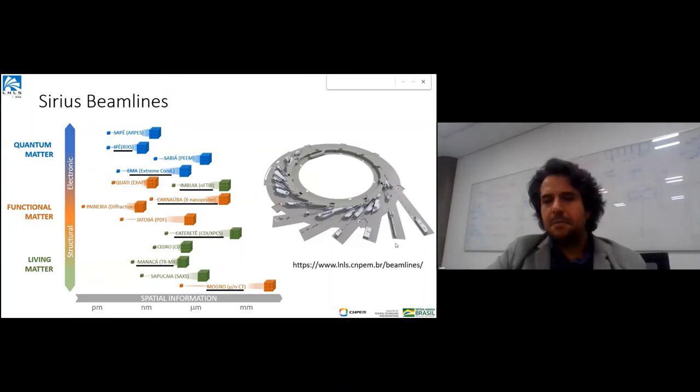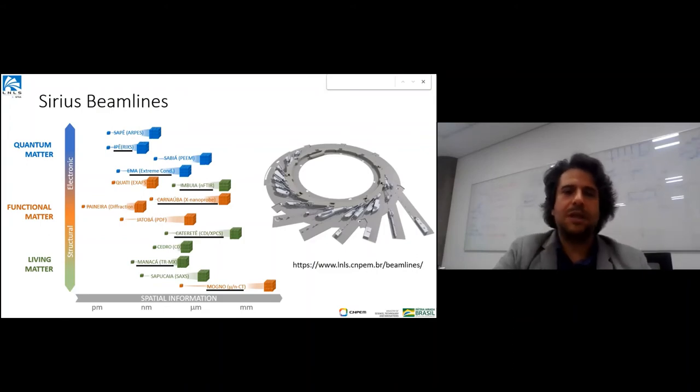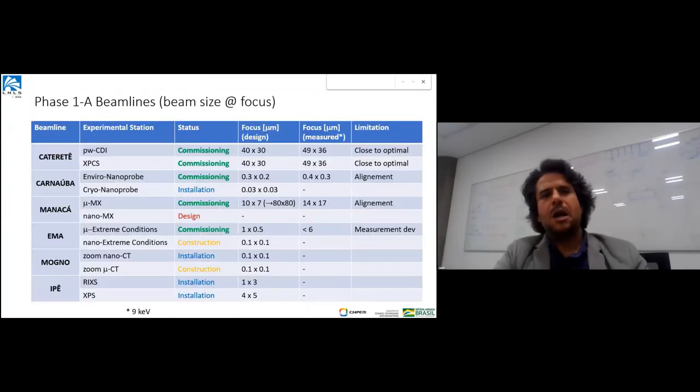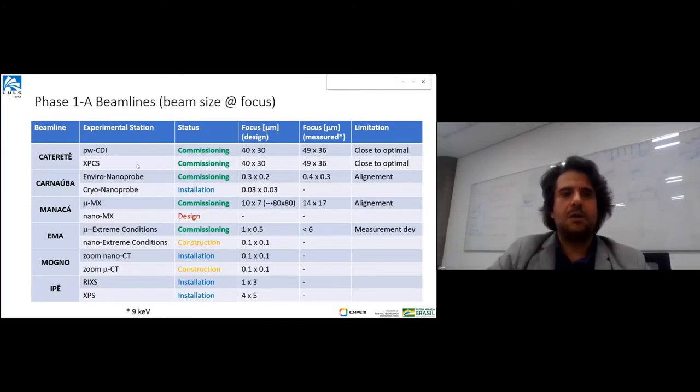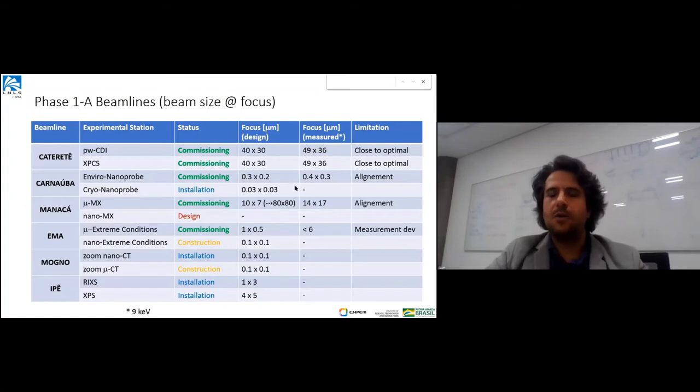All together, this is the suite of beamlines to cover different aspects of matter and different spatial resolutions and field of views. The description of these beamlines - the ones in current installation commissioning have black lines underneath - but you can get more details on our website of how these beamlines work, their specs. We're commissioning, getting close to the focal lengths and focal sizes we expect.